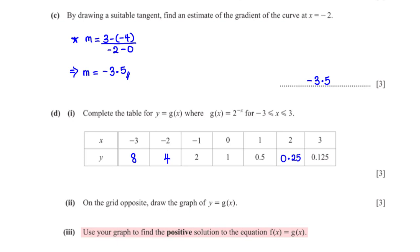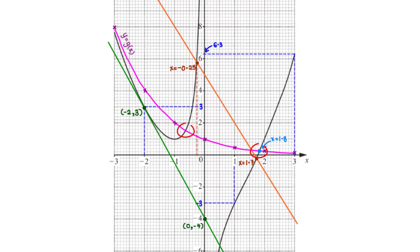Use your graph to find the positive solution to the equation f(x) = g(x). The solution is the x-coordinate of the intersection points between the two graphs. The graphs have two intersection points — one where x is negative and one where x is positive. We are only interested in the positive solution, which is x = 1.8.